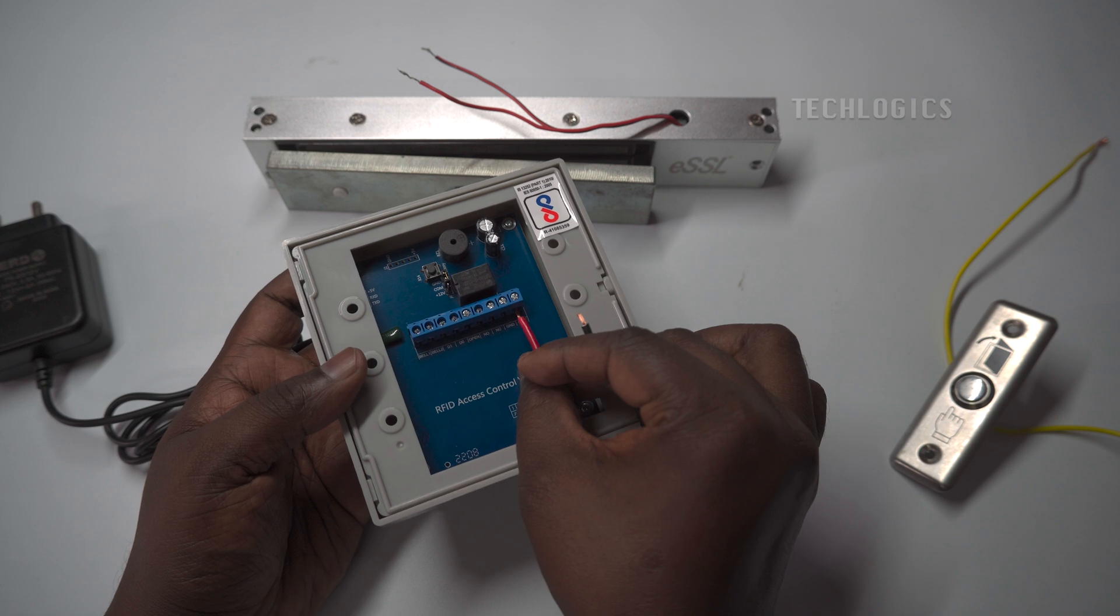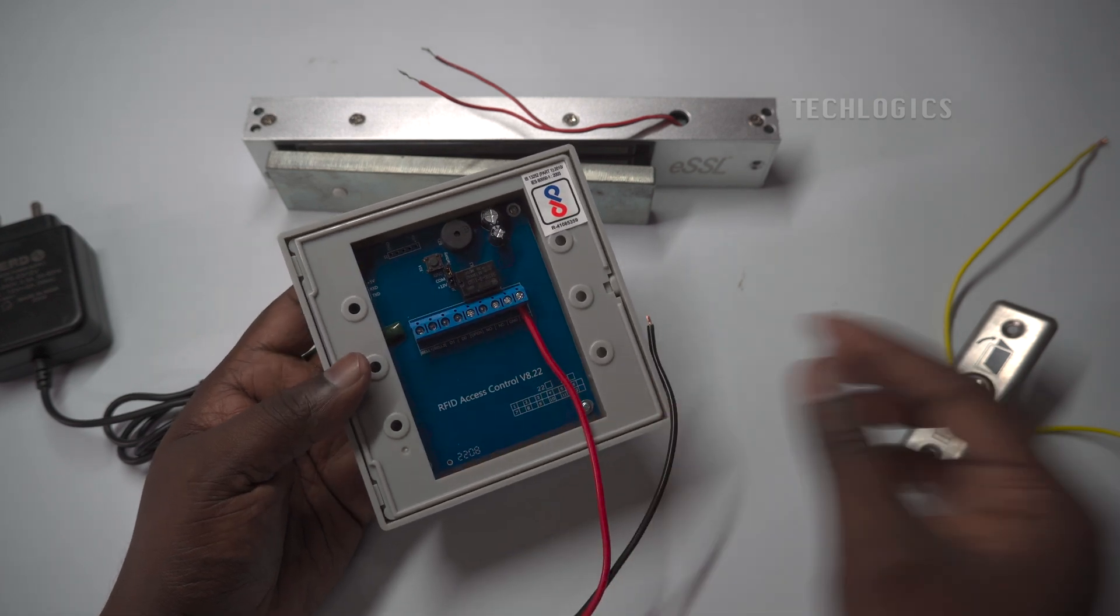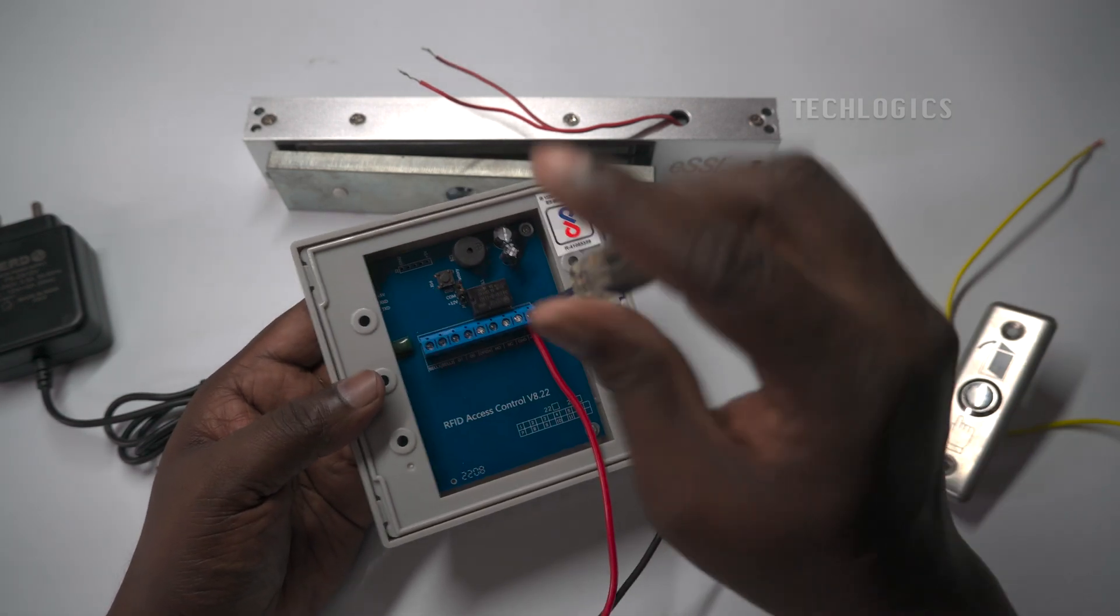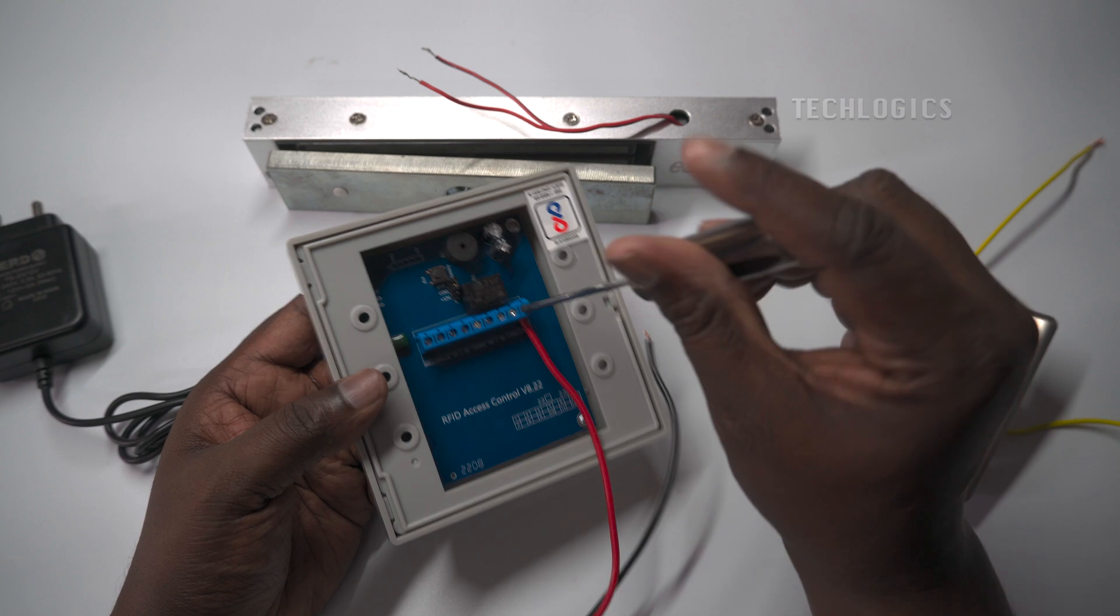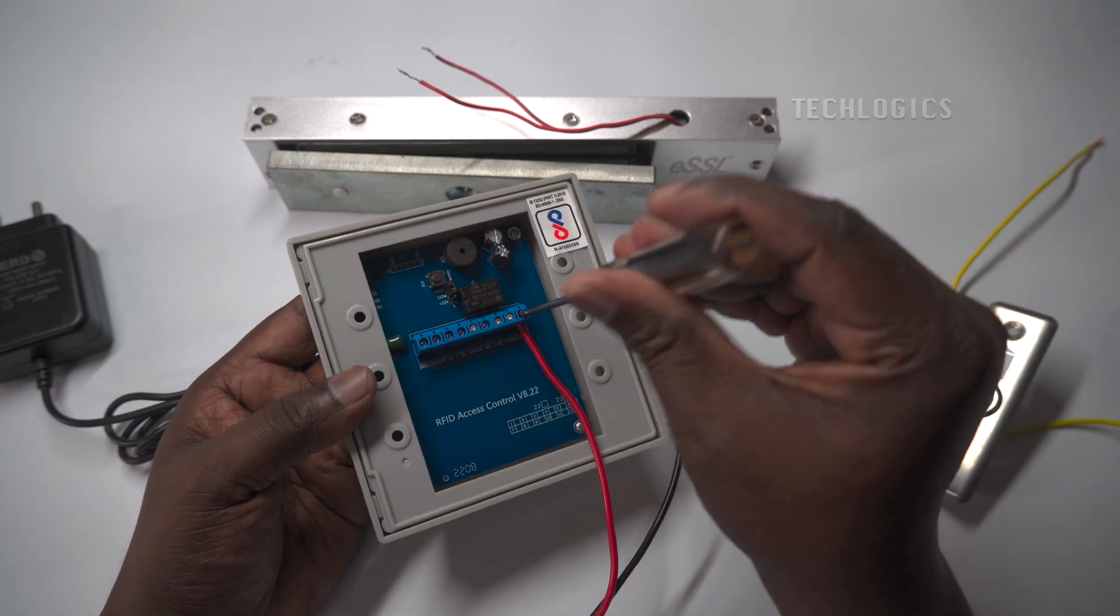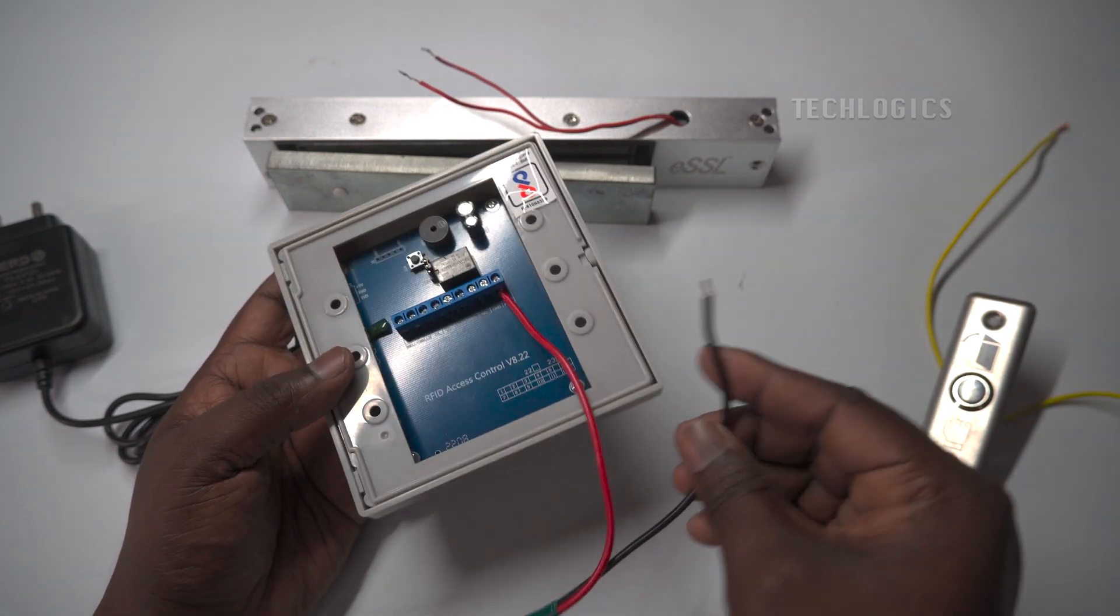Connect the positive wire of the DC power adapter to the positive terminal of the controller and the negative wire of the DC power adapter to the GND terminal of the controller.